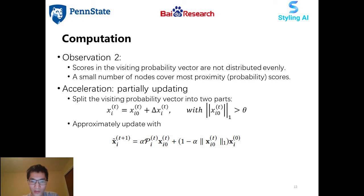We further observe that scores in the visiting probability vector are not distributed evenly — a small number of nodes cover most proximity scores. Thus, we propose our second acceleration strategy, partially updating: we split the visiting probability vector into two parts, with the first part covering most proximity scores, and approximately update the vector by only considering nodes in the first part.